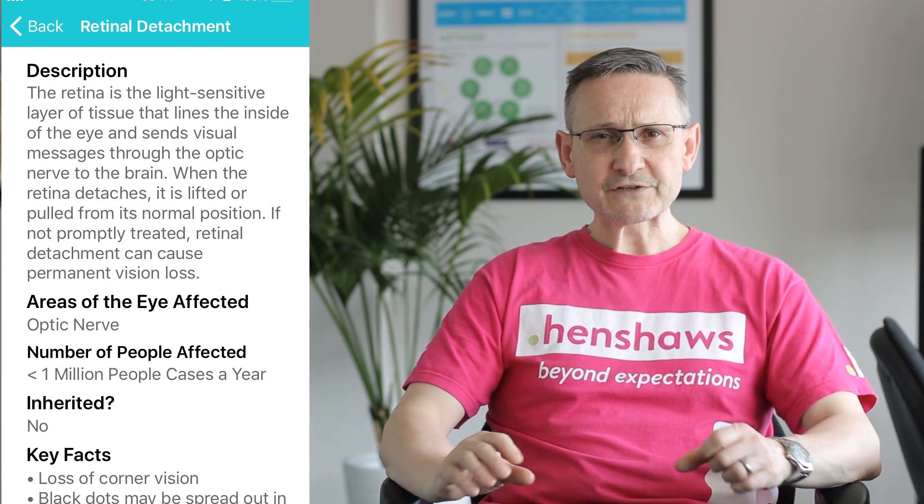I wanted to talk about eye conditions and how they affect people, because there's a general misconception around eye conditions and being blind. In the UK, only 4% of people with sight loss are totally blind and pretty much can't see anything. The rest have varying degrees of sight loss.